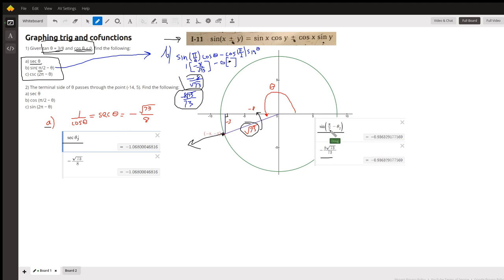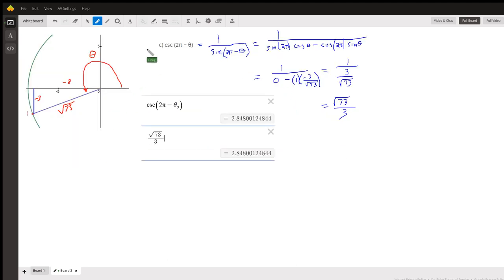So sine of π over 2 minus theta is equal to negative 8 radical 73 over 73.